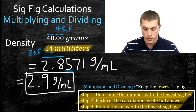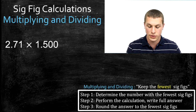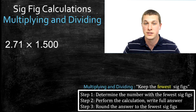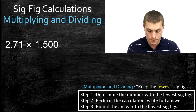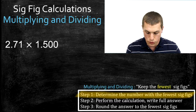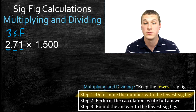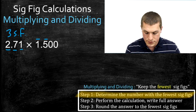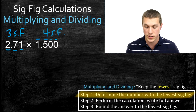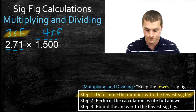This makes sense: you keep the least precise number of sig figs so your answer doesn't imply more precision than your measurements allow. Next is a multiplication example — the rules are identical. It doesn't matter what the units are. Step one: determine the number with the fewest sig figs. We have 2.71, which has three sig figs, and 1.500, which has four sig figs because trailing zeros are significant when there's a written decimal point.